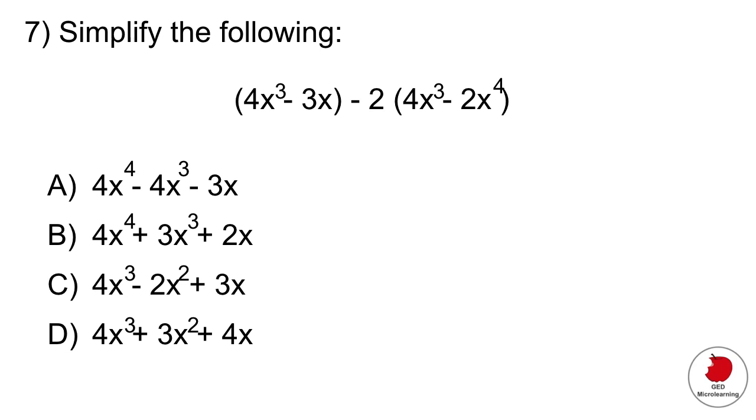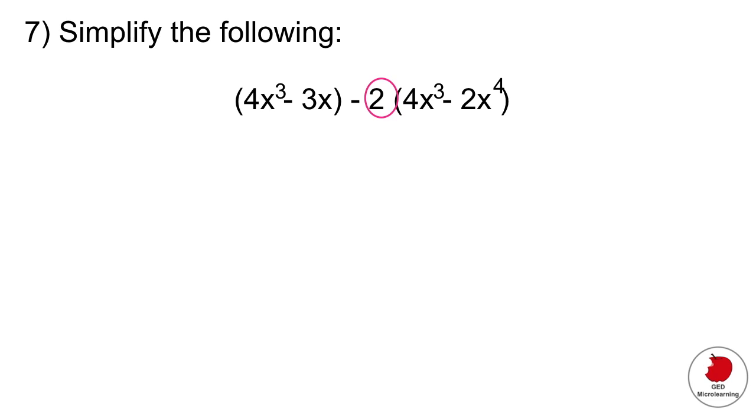Question 7 is asking you to simplify the following expression. Here, what you have to do is be careful with the signs. We have a negative 2 that we have to multiply by that expression in the bracket. We would multiply that out, and we would end up with this.